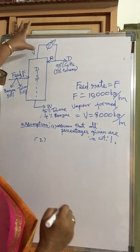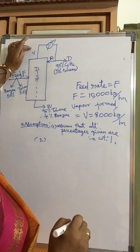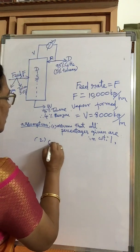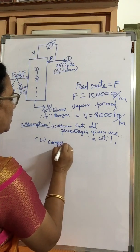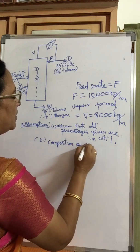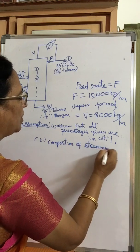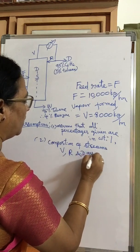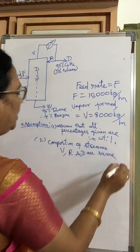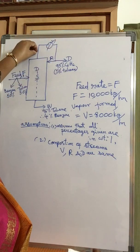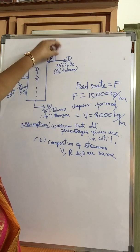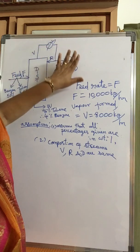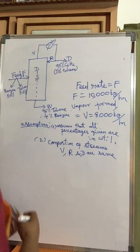Another assumption: V contains both components A and B, R contains A and B, and D also contains A and B. So the composition of streams V, R, and D are the same. Because the same vapor that is formed is condensed, and only a part is refluxed — the composition is not changing.